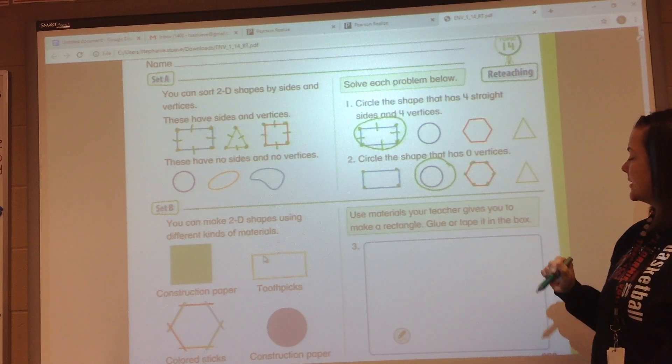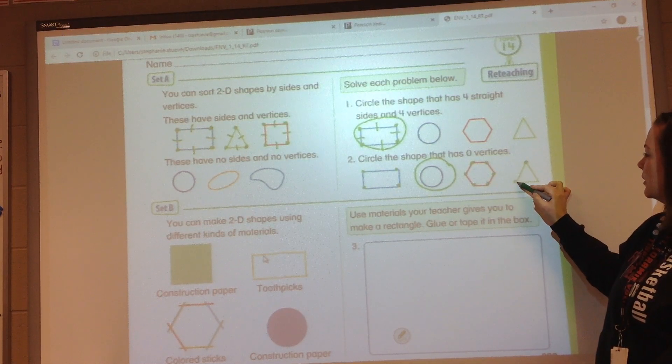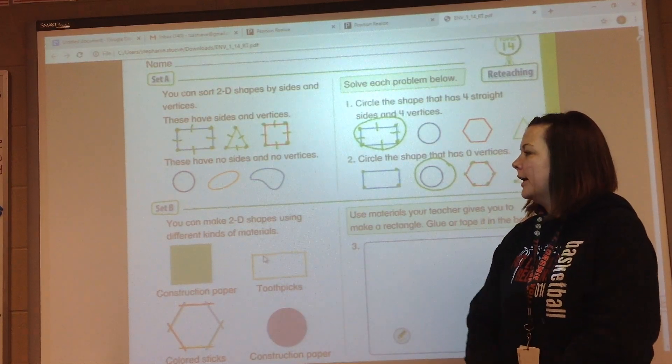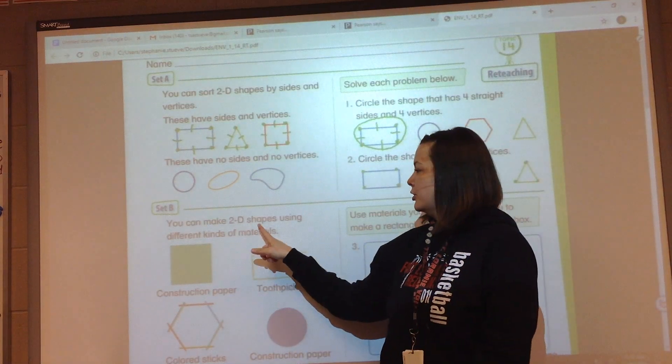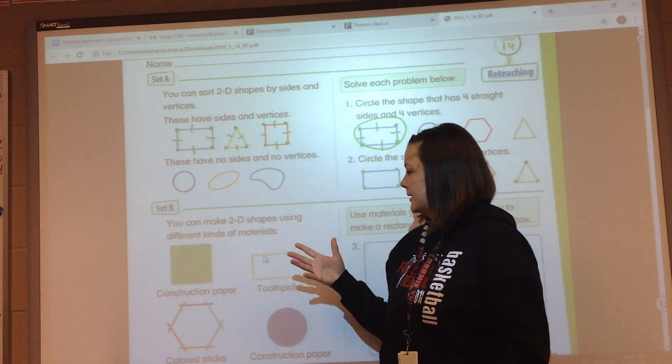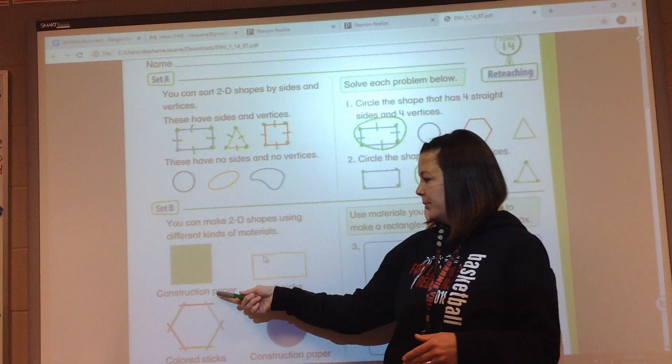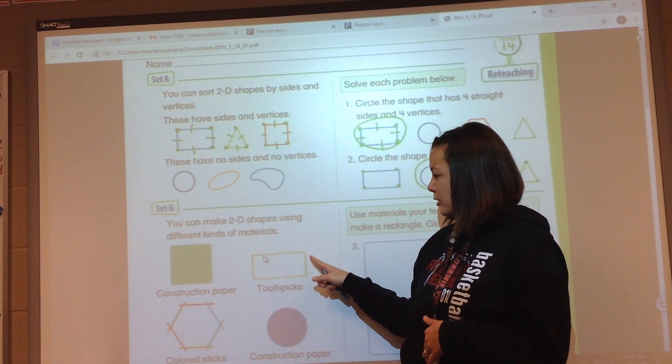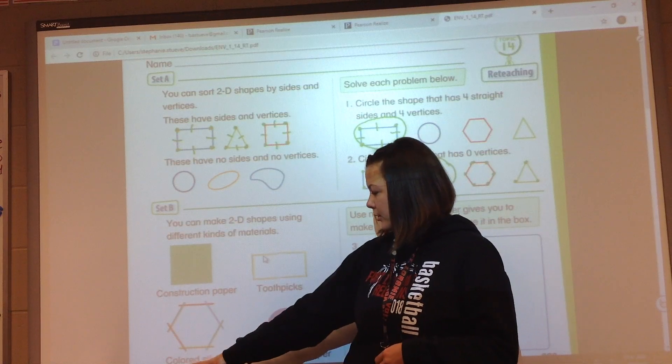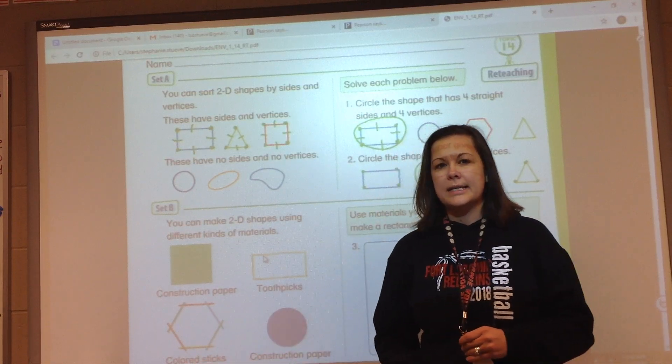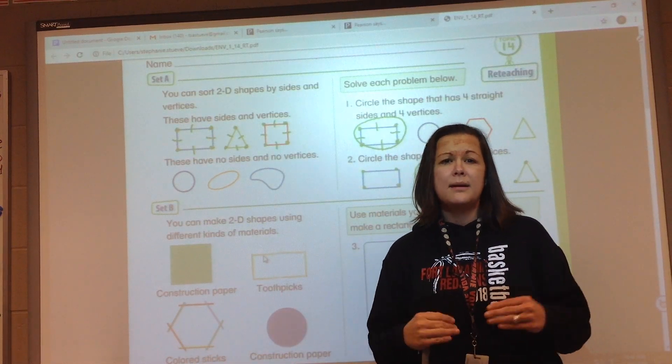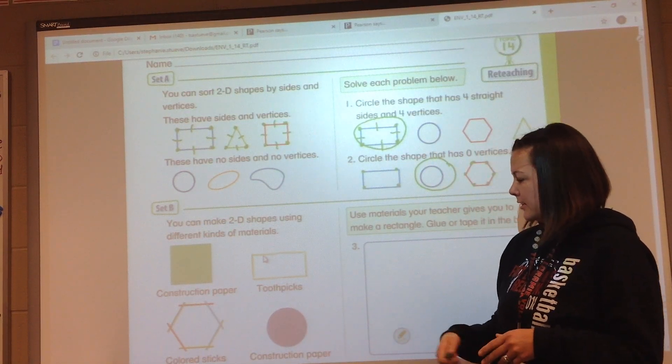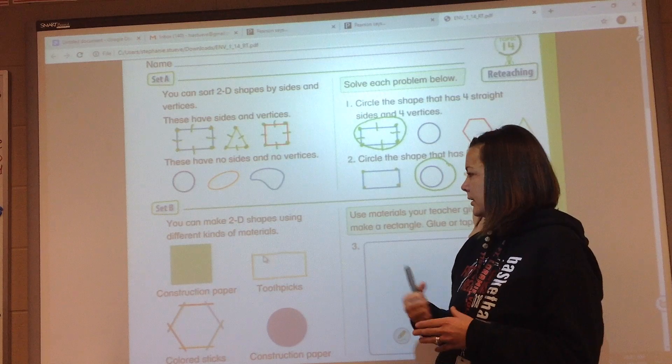All right, Set B. It says you can make 2D shapes using different kinds of materials. For example, you can use construction paper and cut out a square, you could use toothpicks to make a square, you could use colored sticks like Wiki sticks or even your colored pencils and put them together to make a hexagon, or construction paper again to cut out a circle.